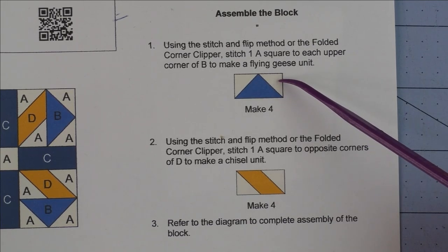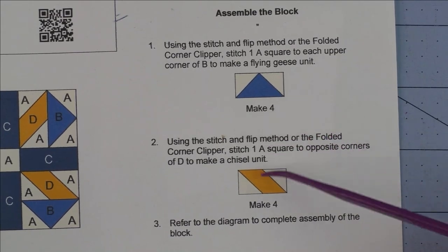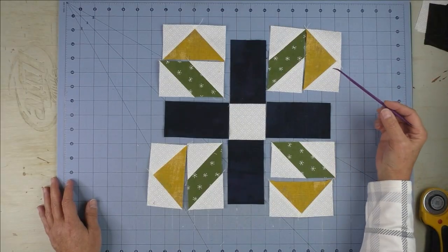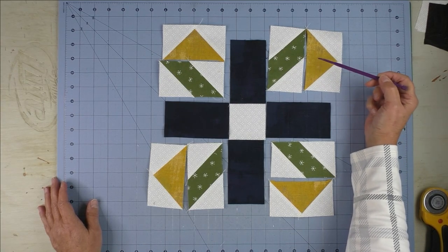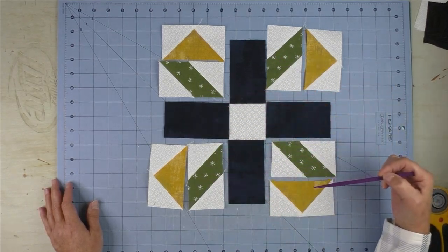Now I'll go and make all of these and come back. Now here are all the units done, the flying geese and the chisel units. We're going to sew those together, all four of them, then we'll put the block together like this.